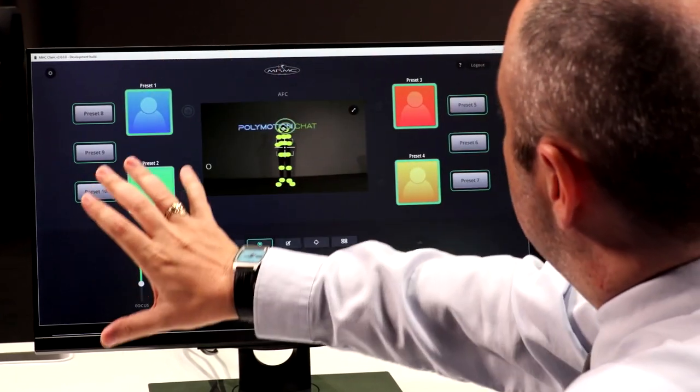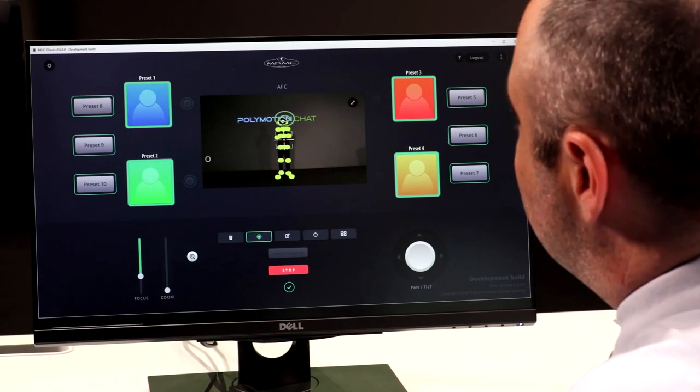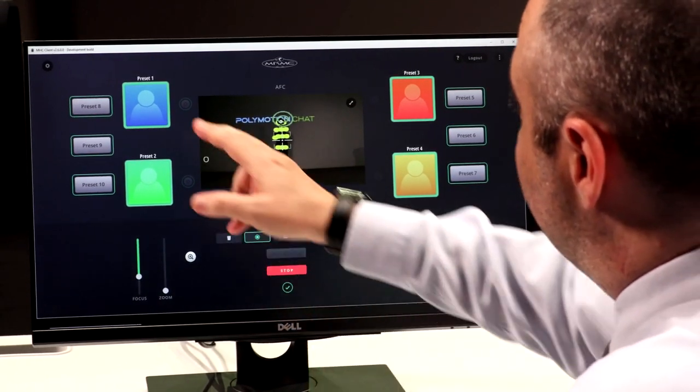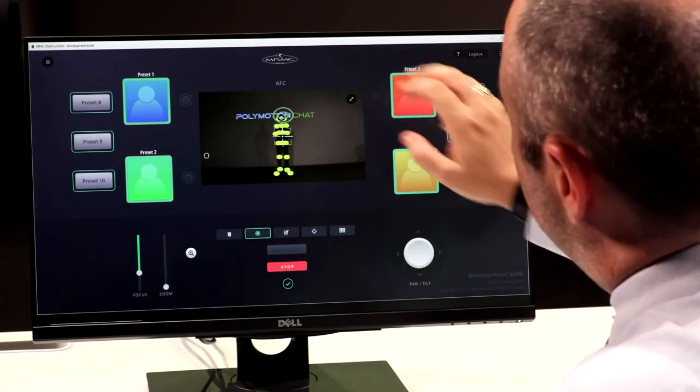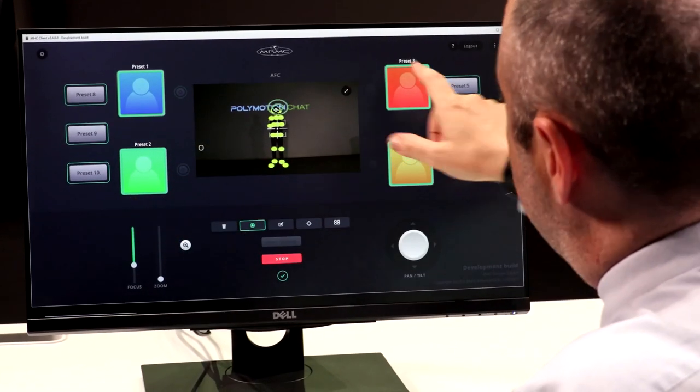There are 10 presets on the screen. These four presets with colors are the tracking presets that would be assigned to make chat actually move, and these can all be changed. So, for example, that could be a top-to-toe shot as we're doing here, that could be a mid shot, that could be a close-up, and pretty much however you want to design the screen.